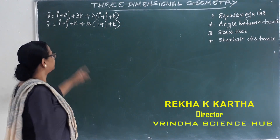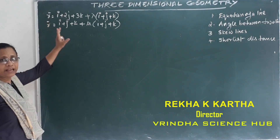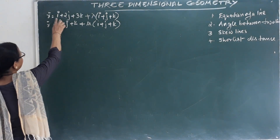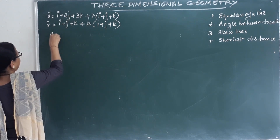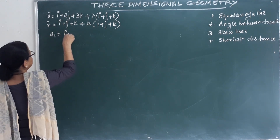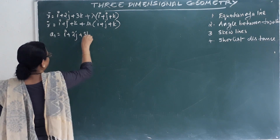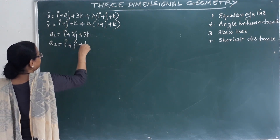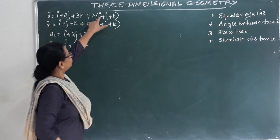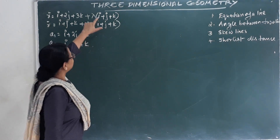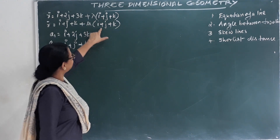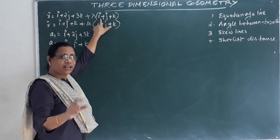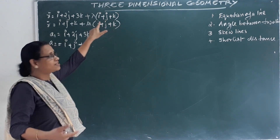Find the shortest distance between these two lines. The vector A1 is i plus 2j plus 3k, and the vector A2 is i plus j plus k. These two direction vectors are the same, which means these two lines are parallel vectors.